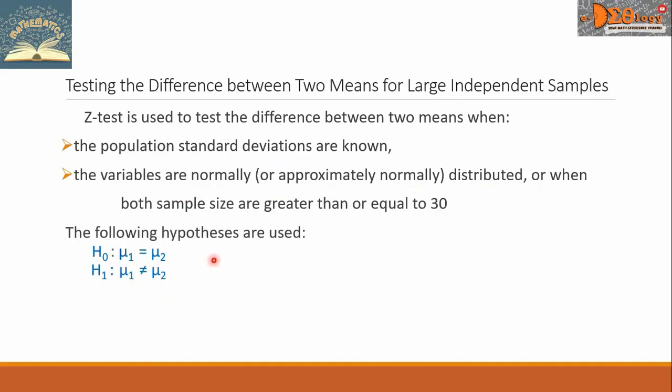The following hypotheses are used. H sub zero, this is the null hypothesis: mu sub one equals mu sub two.